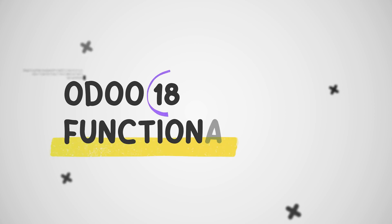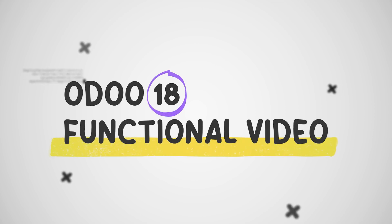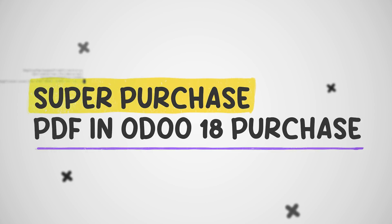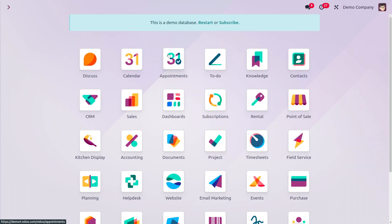Hey everyone, welcome to new updates of Odoo 18. In today's video, we will look into the Super Purchase PDF — the ability to drag and drop a created purchase order PDF from the Odoo 18 purchase module into the sales module. This is a feature that allows for more streamlined and efficient workflow when managing both purchase and selling activities within the same system.